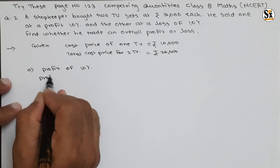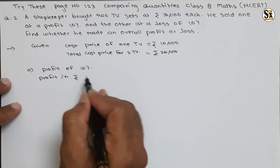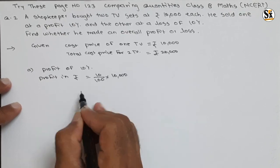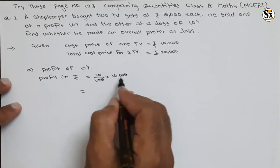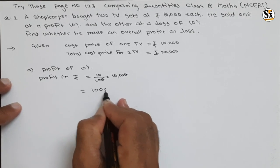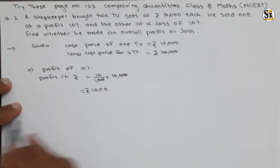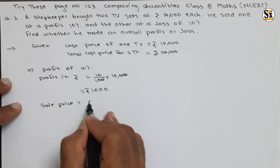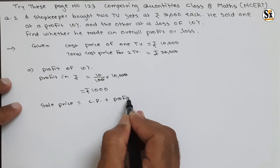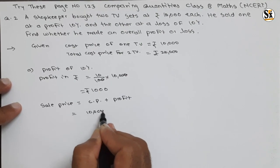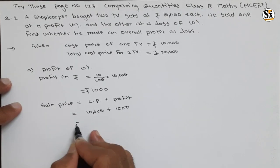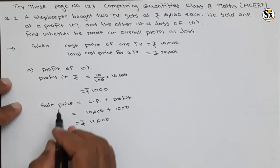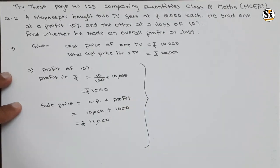For Part A, calculating profit of 10 percent: profit in rupees = 10 divided by 100 into cost price rupees 10,000. The zeros cancel and that gives rupees 1,000 profit. So the sale price for the first TV equals cost price plus profit: 10,000 plus 1,000 equals rupees 11,000.